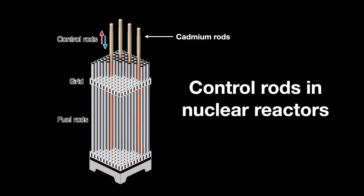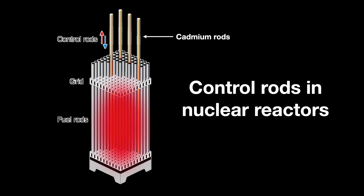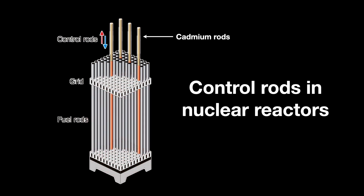In a nuclear fission reactor, rods of cadmium are used to absorb neutrons. Those neutrons are responsible for the chain reaction, causing the nuclear material in the reactor core — usually uranium — to break into smaller atoms, releasing tremendous amounts of energy. Pulling the rods out of the core allows more neutron reactions to take place, heating up the core. Pushing the rods in slows the reaction, cooling the reactor — hence, control rods.